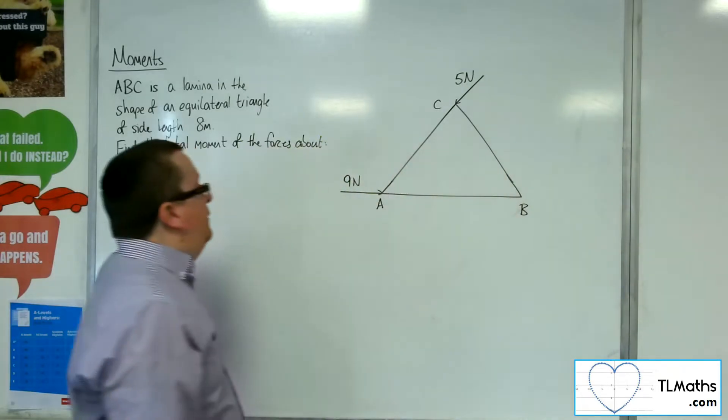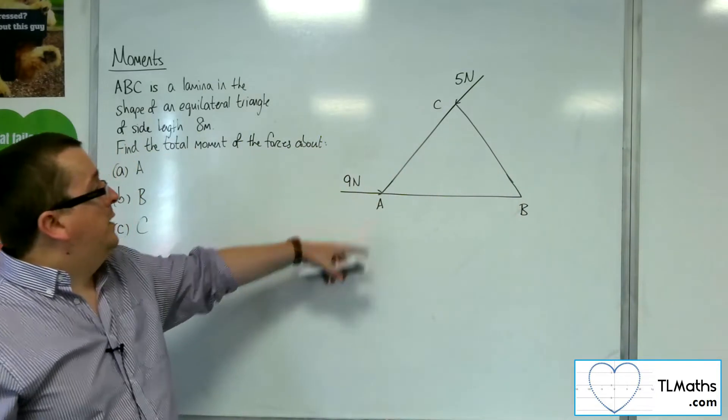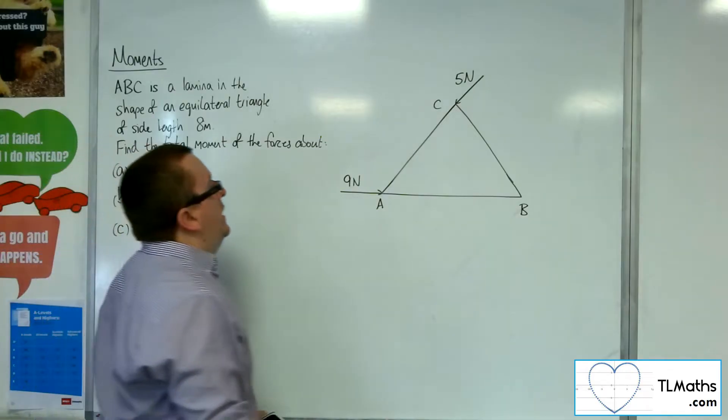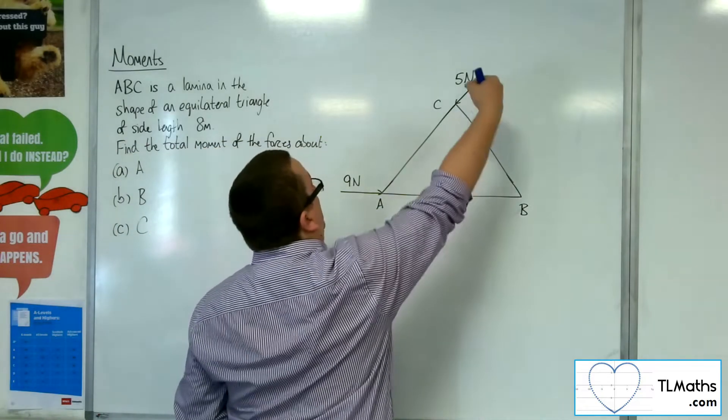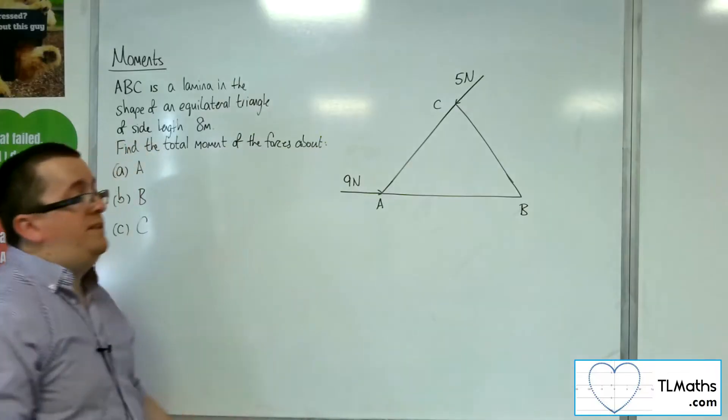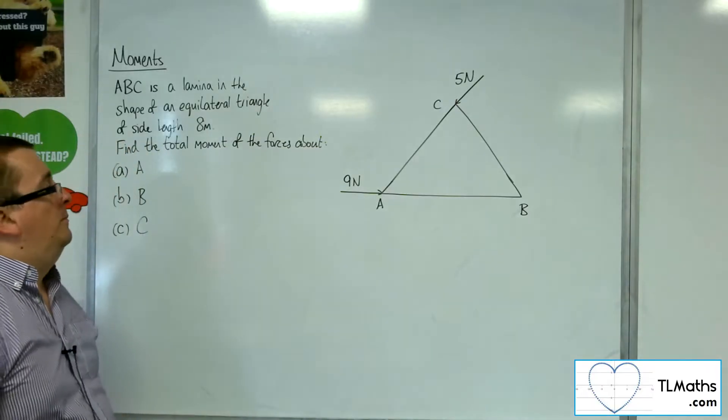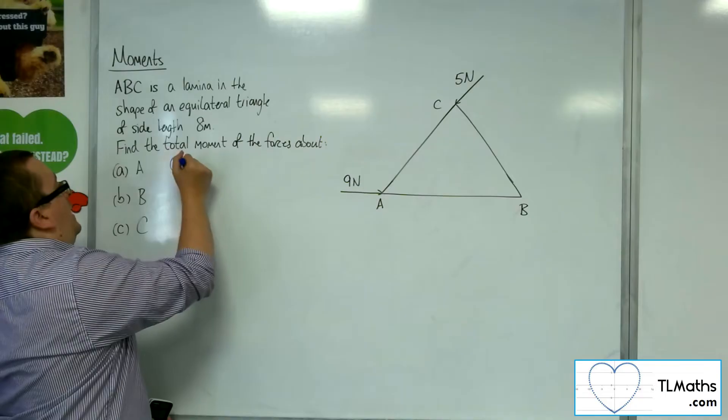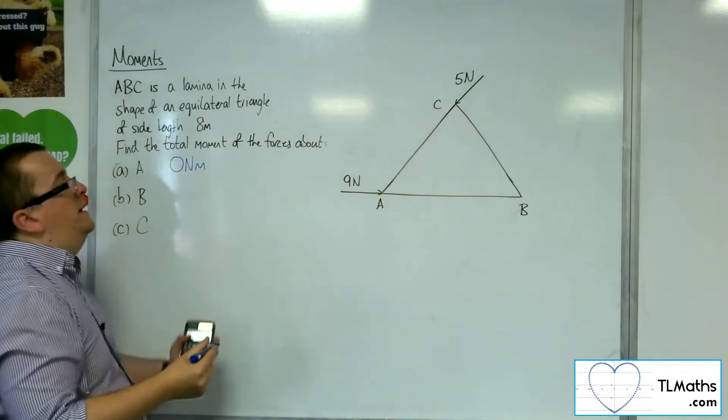Okay, so if we're looking at the moment about A, then in both of the cases, the forces are going straight through A, so the perpendicular distance will be 0. So that means the total moment through A is 0 newton metres.